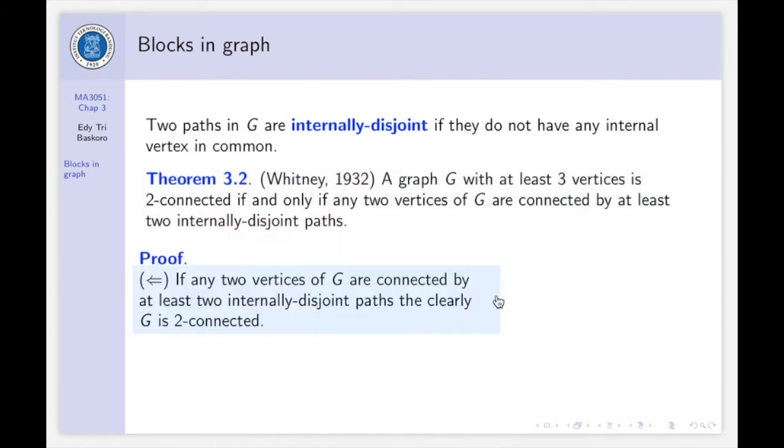Okay, let's see the proof. We prove from right to left. If any two vertices of G are connected by at least two internally disjoint paths, then clearly G is two connected. Because whenever you remove a single vertex, then this graph remains connected. But whenever you remove two vertices, one in the first path joining between U and V, and then the other one, you remove another vertex, and then the second path from U to V, then we will disconnect the graph because U and V is no longer connected.